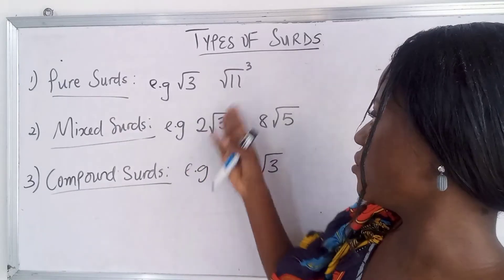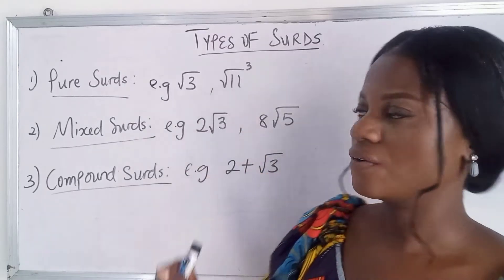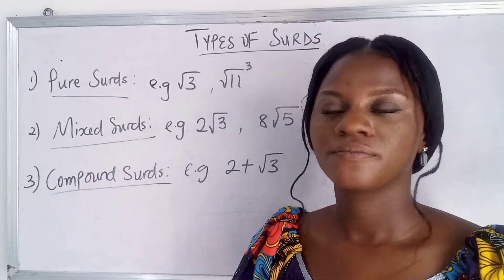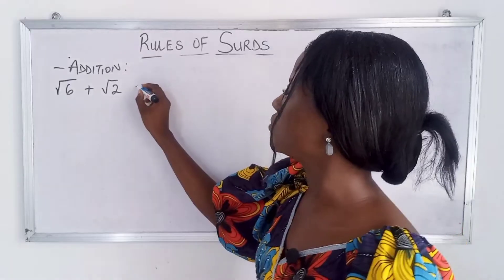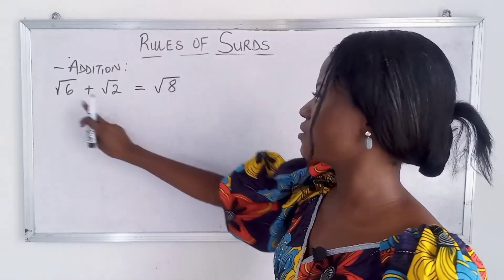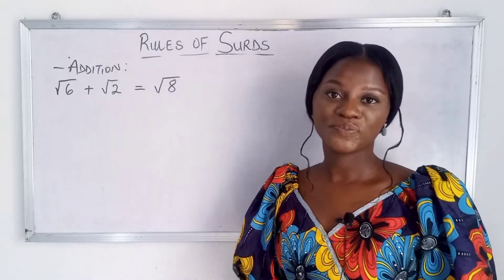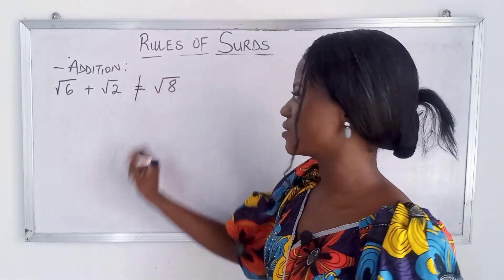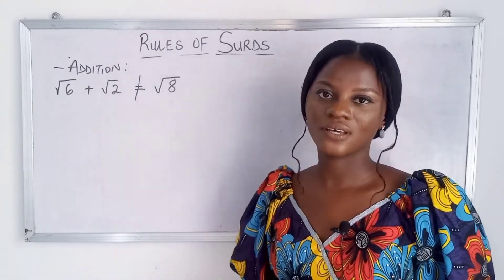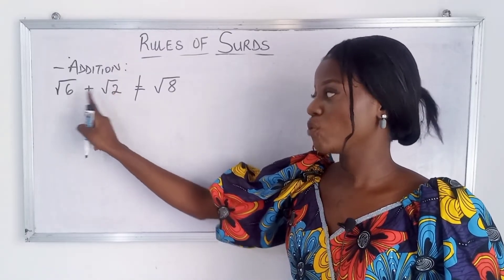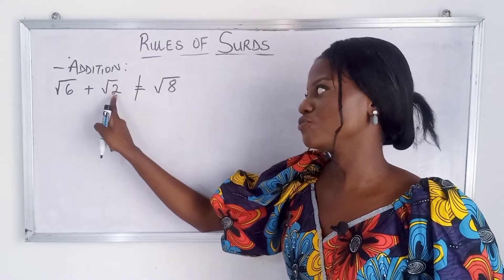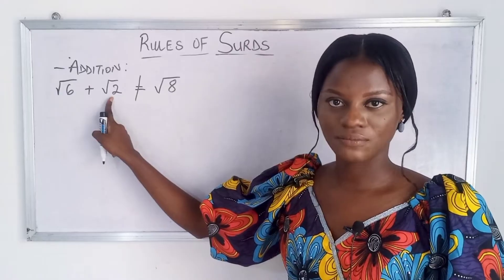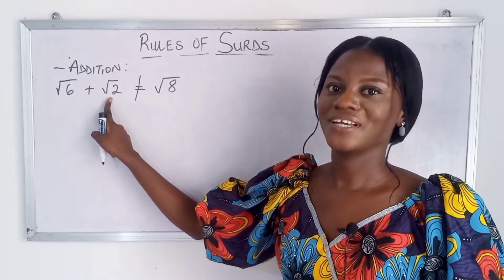Let's move to the examples for today. Can we add root 6 and root 2 to get root 8? Some people say yes, some say no — the people saying no are correct. You cannot add surds with different radicands. The values inside your roots cannot be added if they are different.